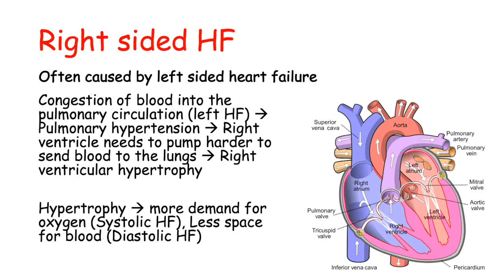Now let's talk about right-sided heart failure. Often, what causes right-sided heart failure is left-sided heart failure. The congestion of blood in the pulmonary circulation ultimately leads to congestion back into the right ventricle through the pulmonary arteries — causing pulmonary hypertension due to congestion in the pulmonary circulation from left-sided heart failure. This pulmonary hypertension means the right ventricle needs to pump blood more forcefully, increasing its workload and ultimately leading to right ventricular hypertrophy.